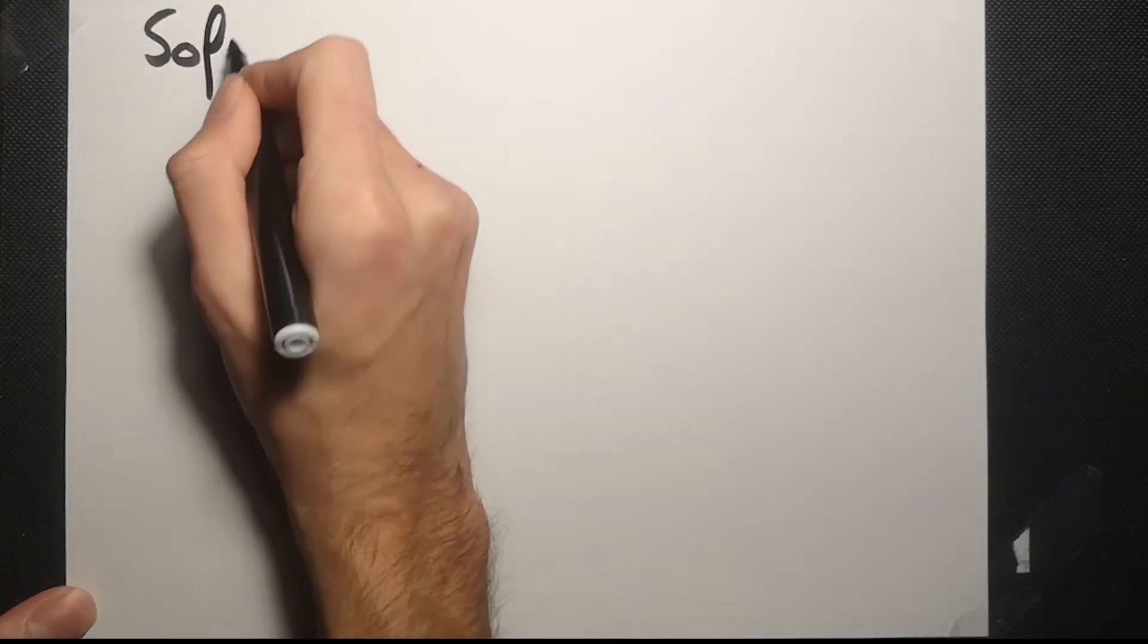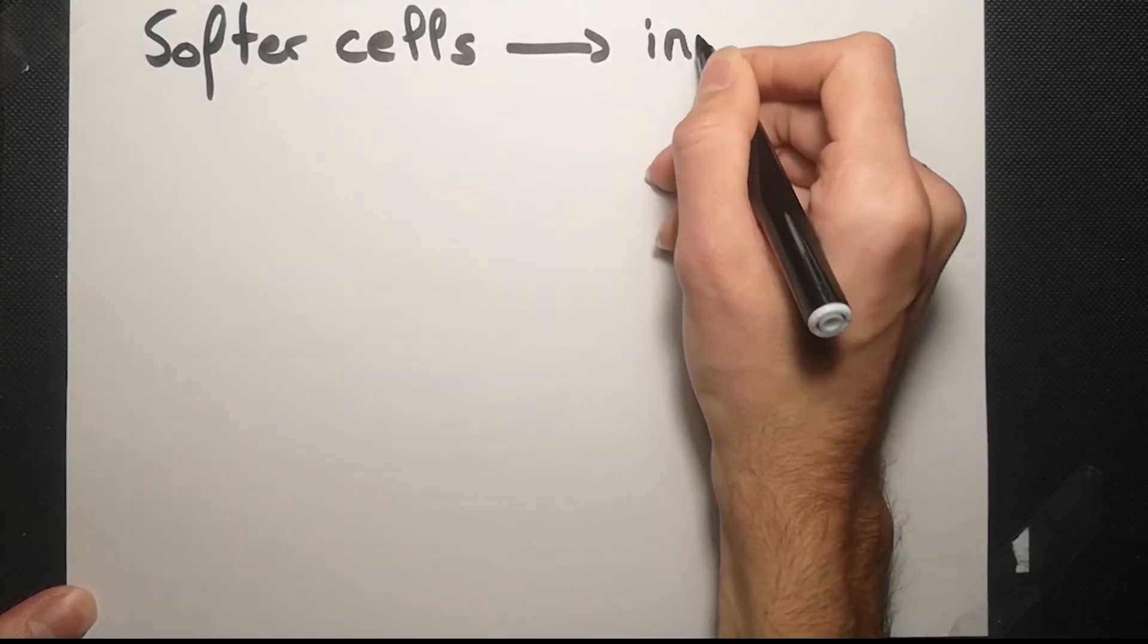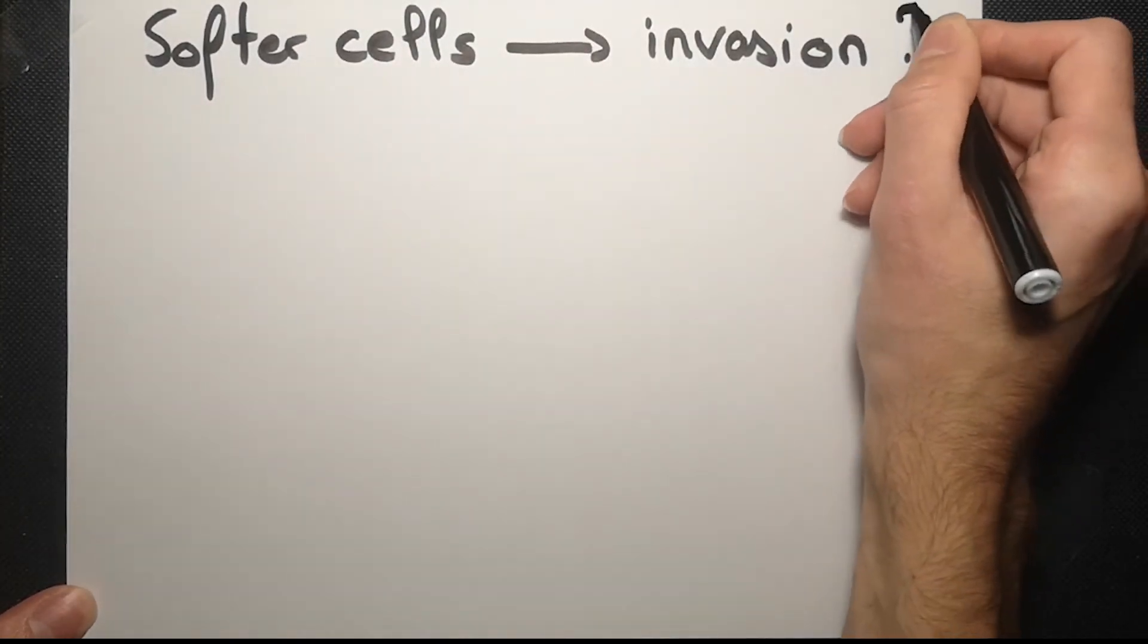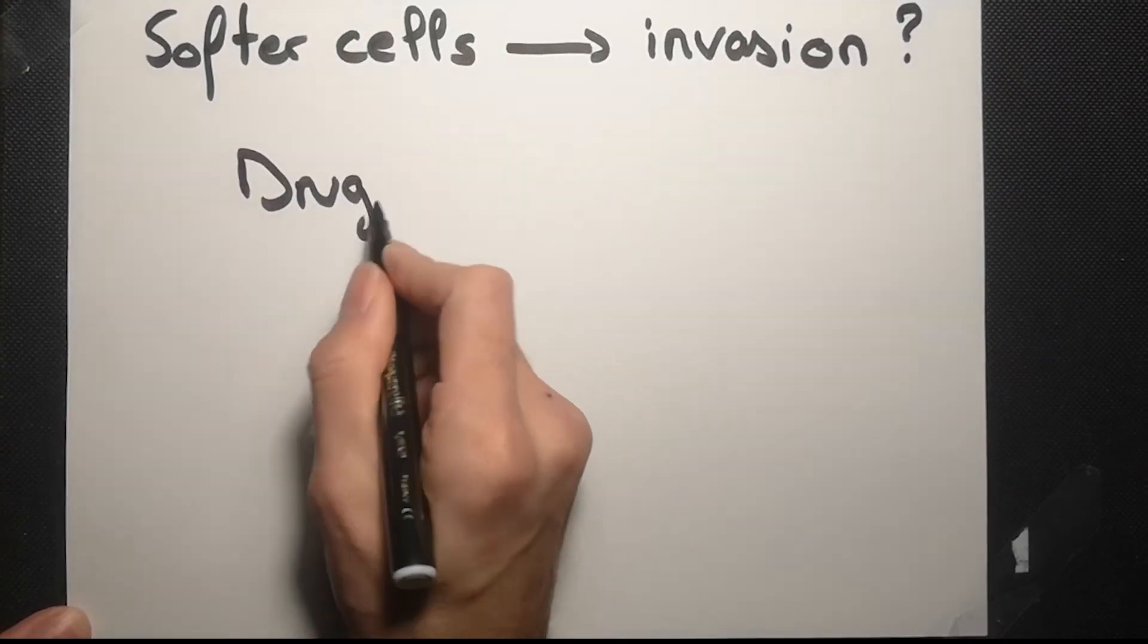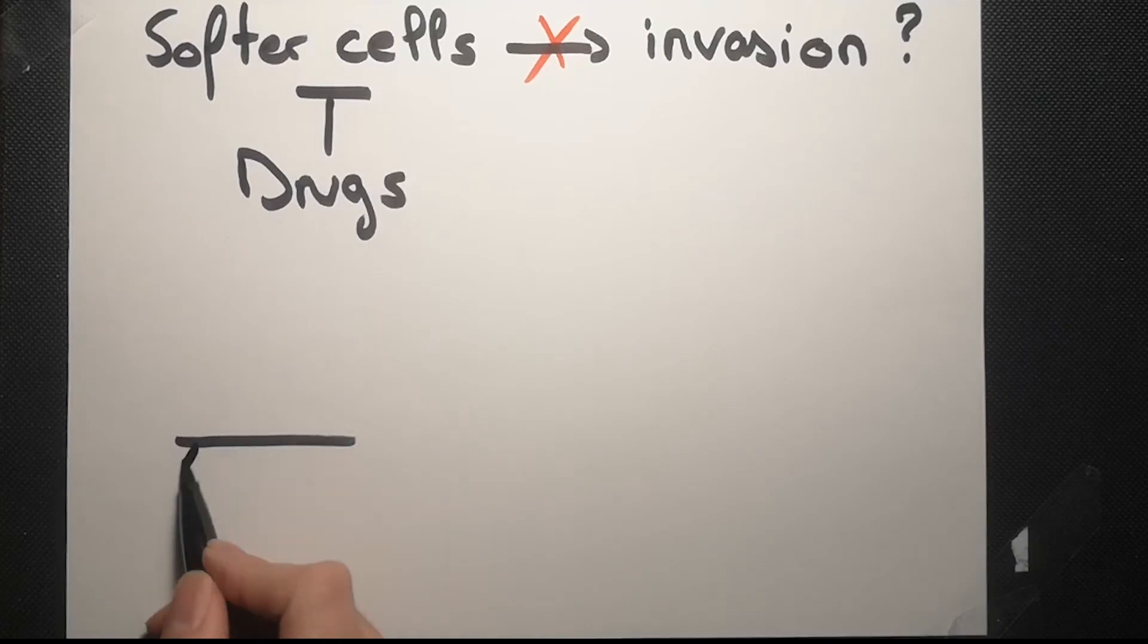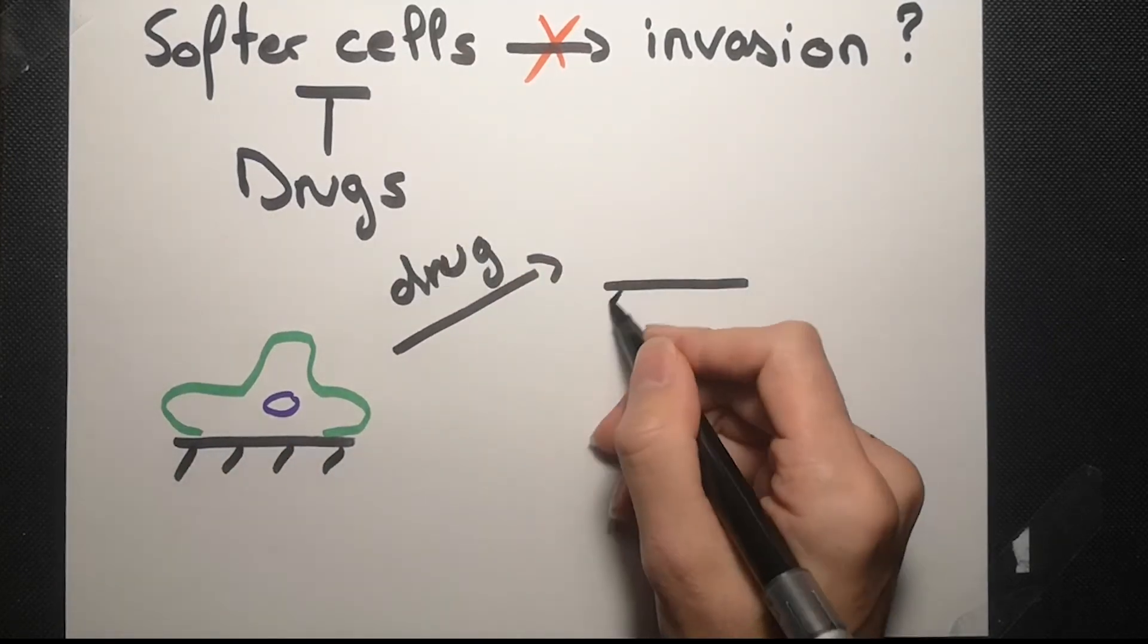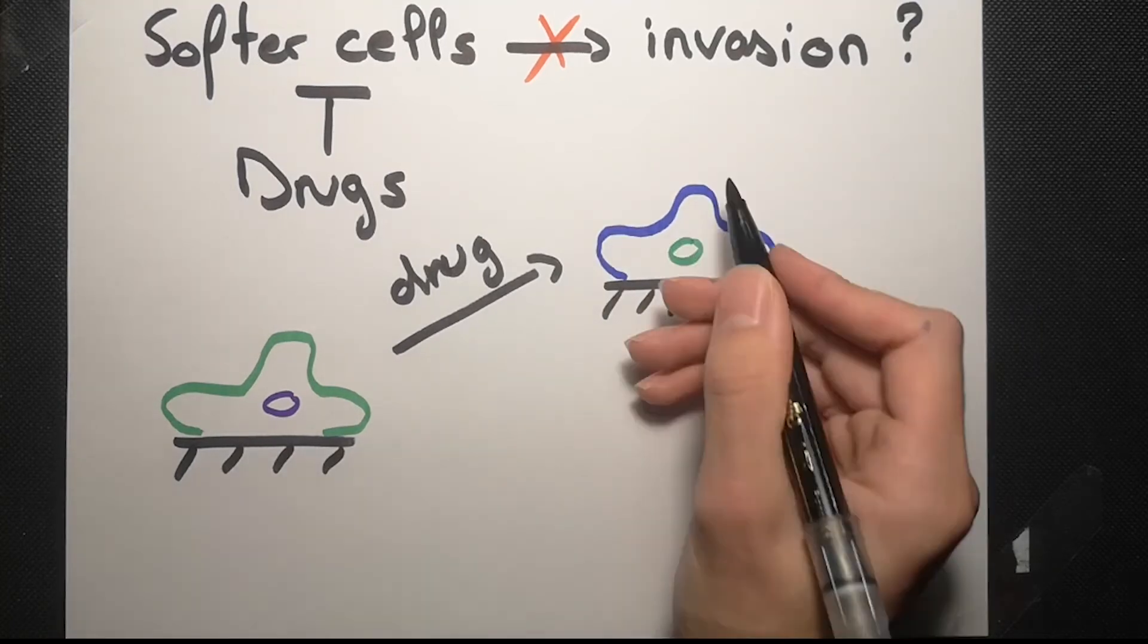But can we target the soft population or make them stiffer to reduce the invasive behavior? To do it, we use drugs that turn cells stiffer. For example, if we apply the drug to obtain stiffer cells, only 20% invade surrounding tissues.